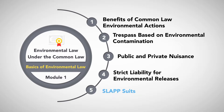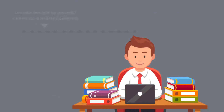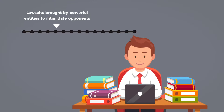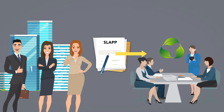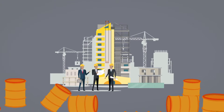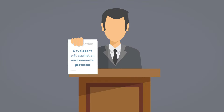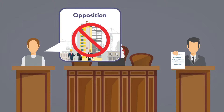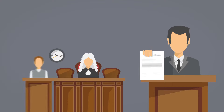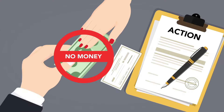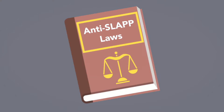SLAPP suits. Strategic lawsuits against public participation is a phrase developed by legal scholars to describe the trend of lawsuits brought by powerful entities to intimidate opponents. Corporate plaintiffs have sometimes brought SLAPP suits against environmental organizations when high-profit development projects are on the line and environmental impacts are a concern. The SLAPP suit may, for example, be a developer's suit against an environmental protester who had announced opposition to the developer's project, alleging defamation. While the developer may realize that the defamation action won't ultimately succeed, it may scare off the protester, who may not have the money to hire an attorney to defend the action, and may scare off other potential protesters. Anti-SLAPP laws impose penalties on companies who bring SLAPP suits.